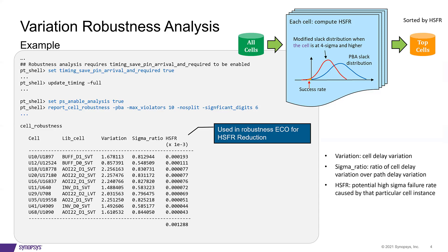Then, we compute the modified slack distribution under the condition that this cell is at a high sigma, for example, 4 sigma. And this curve is shown in red. Notice the very small yellow area. In this plot, it indicates HSFR. And we compute this for every single cell in the design.